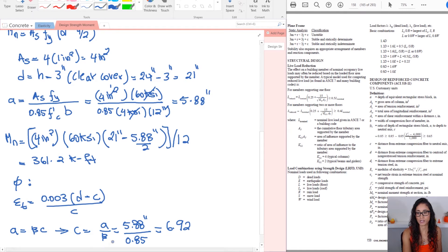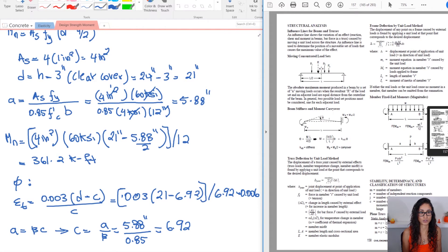So once you plug in this number, you will get an answer of 6.92. So now that you calculated C, you can come here. You have 0.003 times D, which is 21 minus C, which is 6.92. And then you divide that by 6.92 and you get an answer of 0.006. So your epsilon T is actually larger or greater than 0.005.